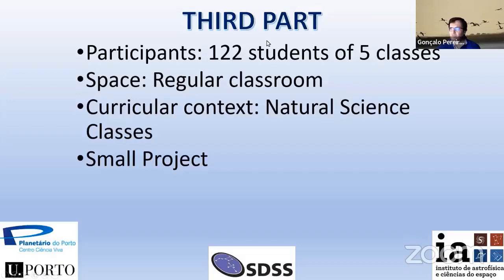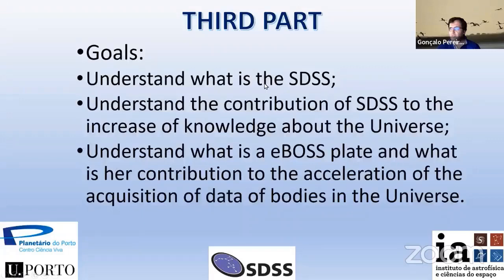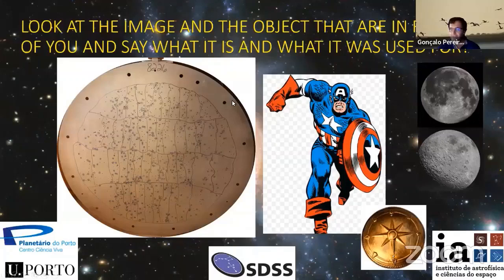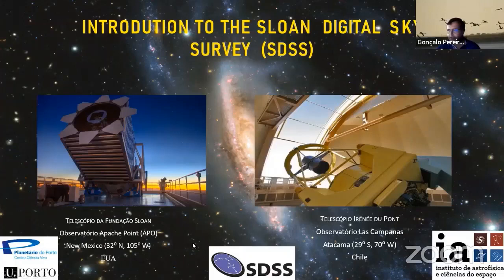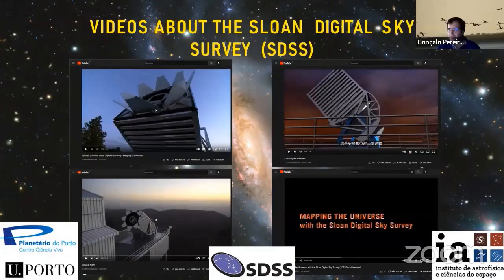I developed another project of five classes in a regular classroom. The project was called SDSS. The first thing I asked my students was what they thought this object was for, and they came with very nice, interesting answers. This is about the Sloan Digital Sky Survey. They have two telescopes — one in the North Hemisphere at Apache Point, and Las Campanas in the South Hemisphere in Atacama — to cover both hemispheres.